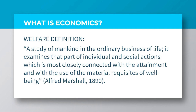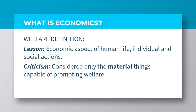As a result, Alfred Marshall also defined economics as the study of mankind in the ordinary business of life. It examines that part of individual and social actions which is most closely connected with the attainment and with the use of the material requisites of well-being. Marshall considered mankind's ordinary business of life, which is basically the economic aspect of human life, and also recognizes the fact that individuals and society play the role of using material things for their satisfaction. However, Alfred Marshall only considered the fact that material things — those things that can be seen, felt, and touched — are capable of promoting welfare. He failed to recognize that some immaterial things, such as the services of a doctor or teacher, are also capable of promoting human welfare.